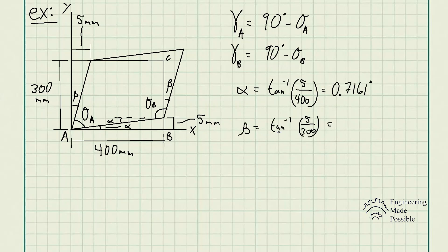Similarly, for the angle beta, we have tangent inverse 5 divided by 300, which gives us 0.9548 degrees.